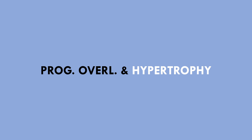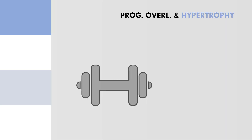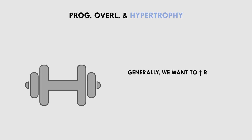Progressive overload is somewhat difficult to quantify for hypertrophy training compared with other performance outcomes. This is because the stimulus for hypertrophy is simply muscle stress induced by resistance training. Unlike performance outcomes, the principle of specificity doesn't apply, because the muscle can be stressed in many different ways and achieve equivalent muscle growth. For hypertrophy training, the ultimate form of progressive overload is to increase muscle stress over time — generally by increasing total work performed by the muscle.